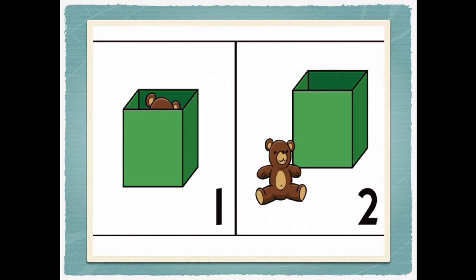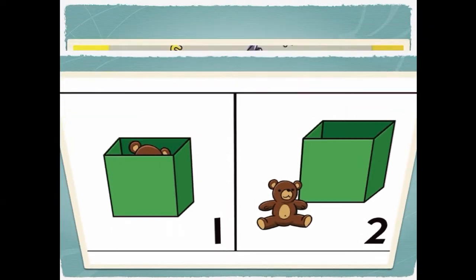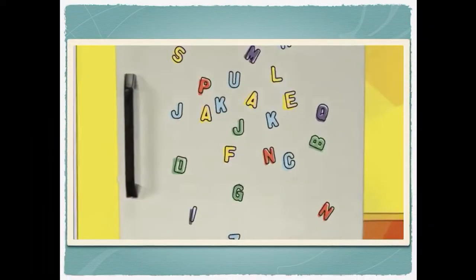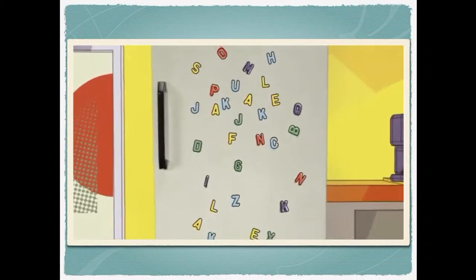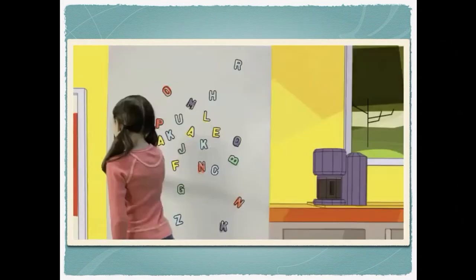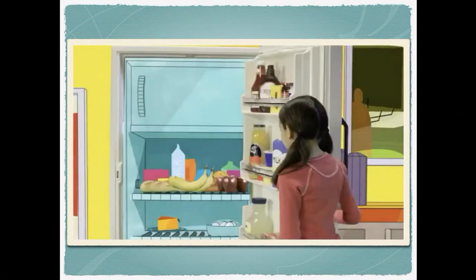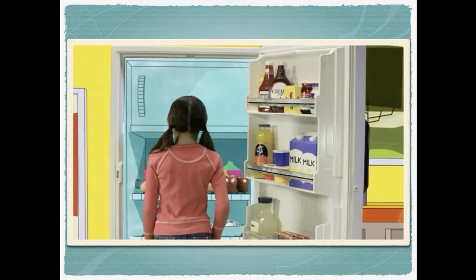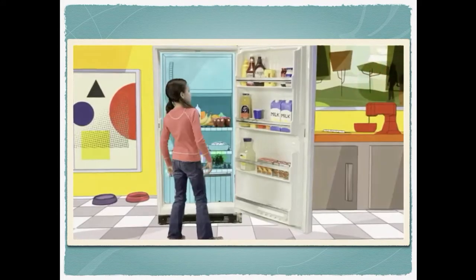Look at number one — the teddy bear is inside the box. Number two — the teddy bear is outside the box. All the letters are outside the fridge. What's inside the fridge? Food is inside the fridge.